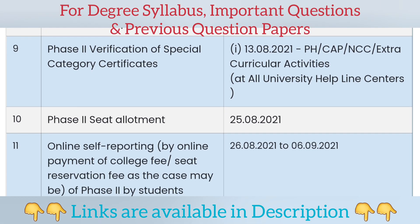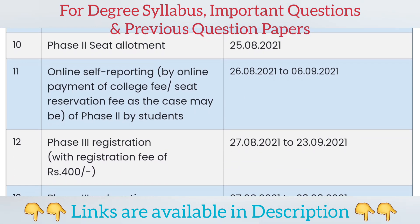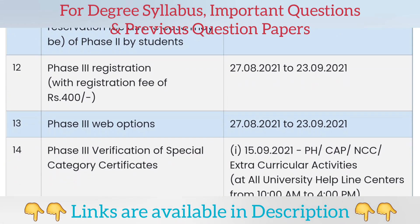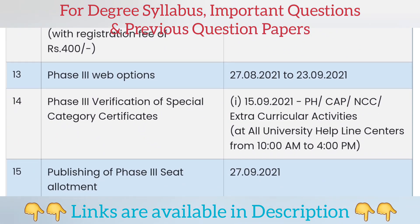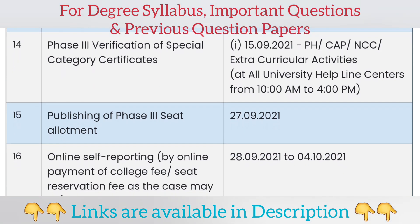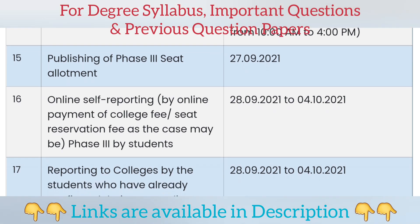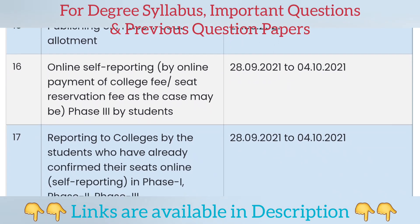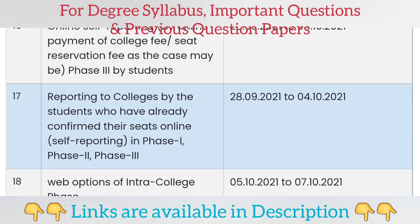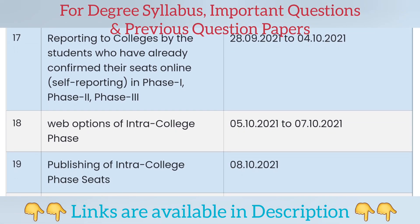Otherwise you will lose your seat which you secured by doing self-report. For those who applied in Phase 3, you have to do two things: first, do self-report by paying 500 rupees or 1000 rupees. After that, second, you have to report to the college to confirm your seat between 28th September 2021 to 4th October 2021.